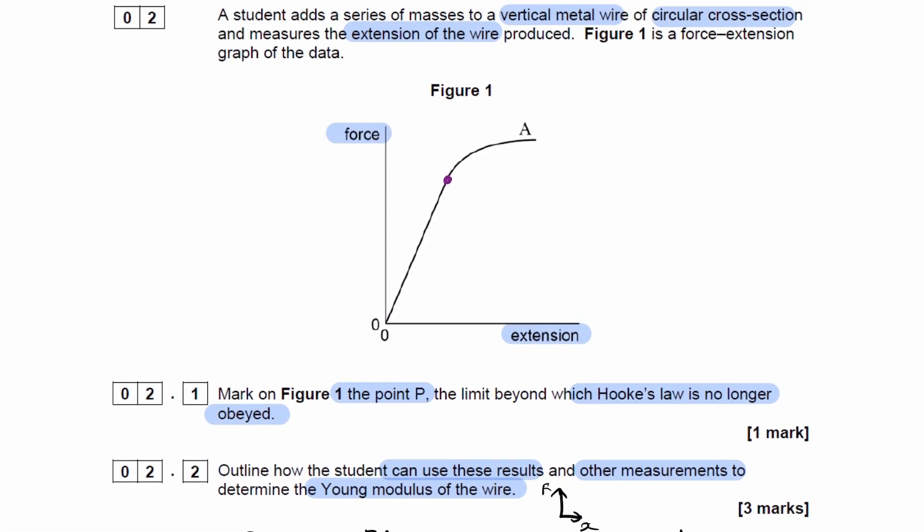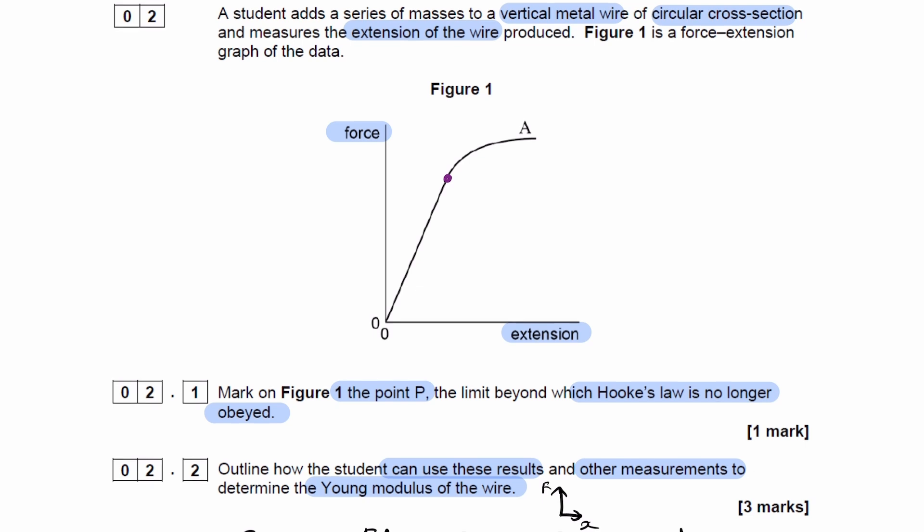We're then removing the masses until they're all removed and drawing the new graph. We would get a straight line back down to zero force, so back down to the extension line, which is parallel to the initial line that we have here.